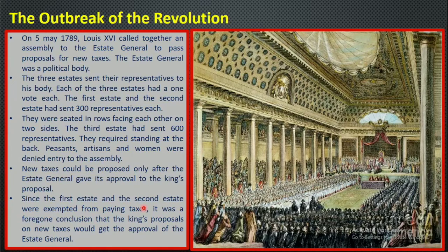In the third estate there were peasants, artisans, and women, who were denied entry into the assembly. The 600 representatives of the third estate had brought 40,000 letters with their grievances, listing the things they wanted addressed. You can see here that the members sitting at the back are the third estate's 600 representatives — they were not even allowed to sit properly in that assembly.